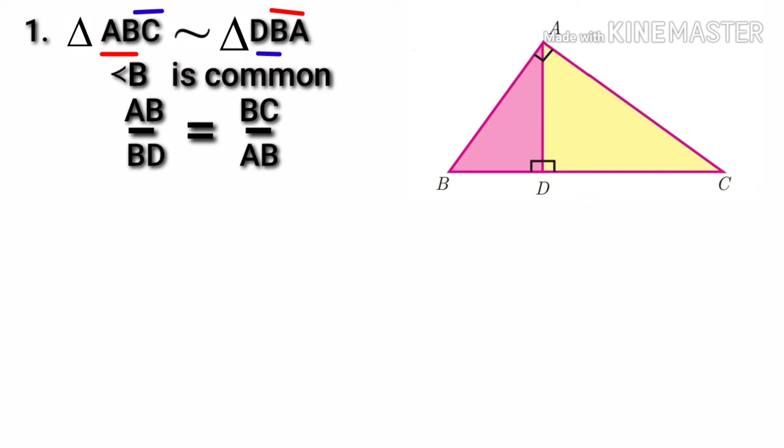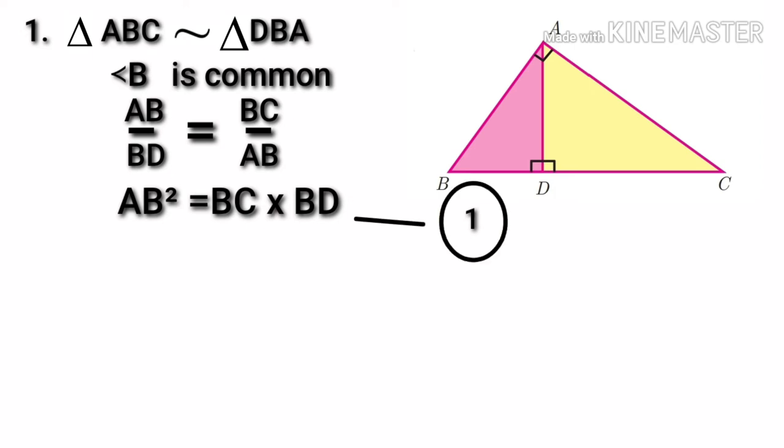Let us write AB by BD is equal to BC by AB. When cross multiplying, AB square is equal to BC into BD. Let us take this as our first equation.